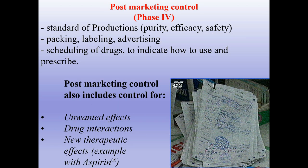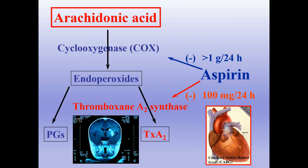Phase four, which we also call post-marketing control, includes standards of production, purity, efficiency, safety, packing, labeling, advertising, and scheduling of drugs to indicate how to use and prescribe them. Post-marketing control also includes monitoring for unwanted effects, drug interactions, and new therapeutic effects. For example, aspirin was initially understood to provide antipyretic, analgesic, and anti-inflammatory effects, but later it was discovered that aspirin in small doses (around 100 mg per 24 hours) also influences thromboxane A2 synthase, affecting blood coagulation and adhesion of thrombocytes.